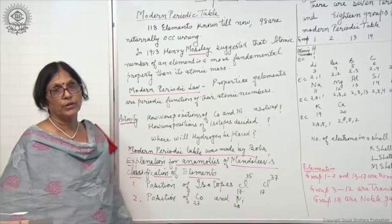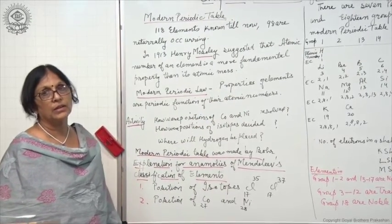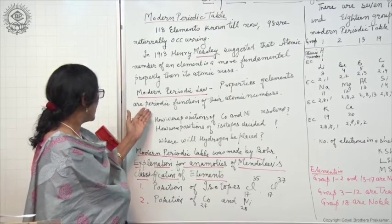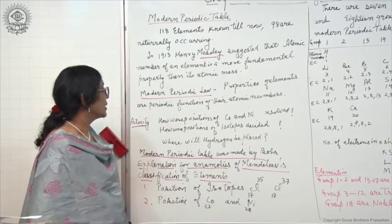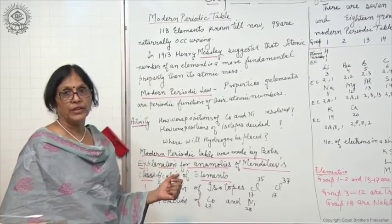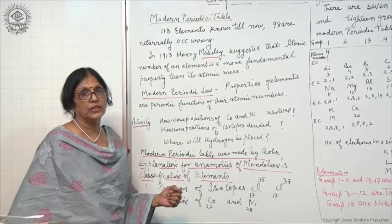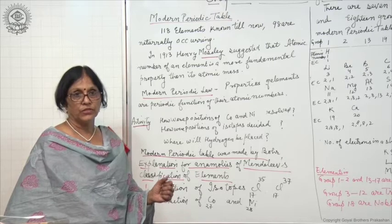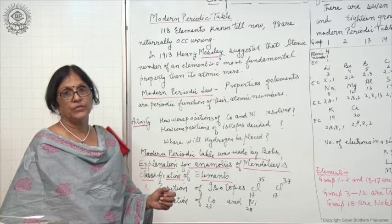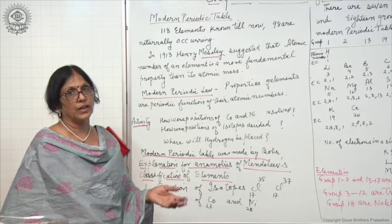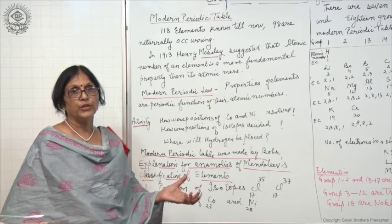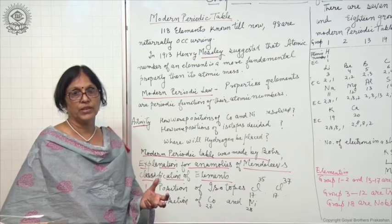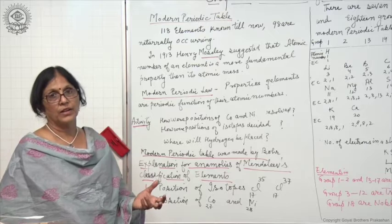The Modern Periodic Law was modified to: properties of elements are a periodic function of their atomic numbers. In the Modern Periodic Table, elements were arranged in increasing order of their atomic numbers, and it was found that properties of elements were repeated after regular intervals. Periodicity means repetition — repetition of properties occurred after regular intervals.